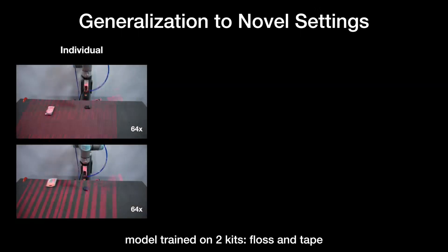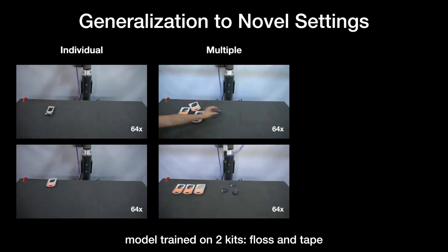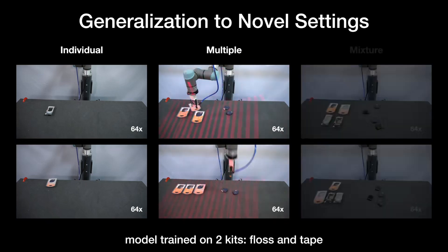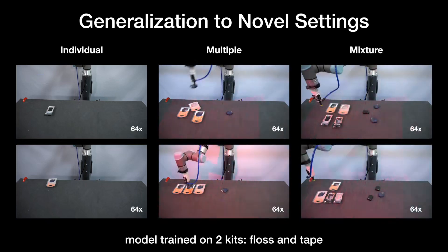Next, we study how well our system can generalize to different kit configurations. Specifically, we select the tape and floss kits and train a model on the same single kit dataset. We perform 20 trials of combinations and mixtures of these kits, never seen during training, and find that our system achieves an assembly success rate that exceeds 94%.